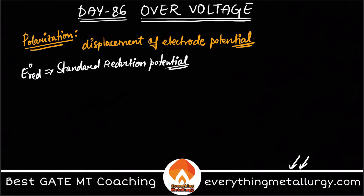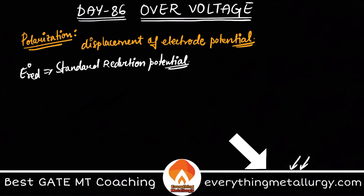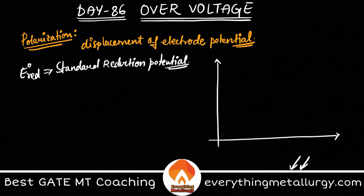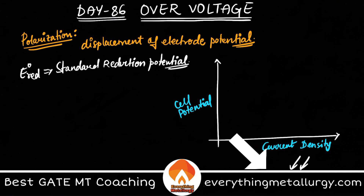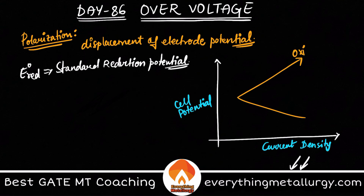Let me give you an idea with a polarization curve. The polarization curve plots cell potential on the y-axis and current density (current per unit area) on the x-axis. You generally draw two lines — one for oxidation and one for reduction. Let's say we have oxidation on top and reduction below.